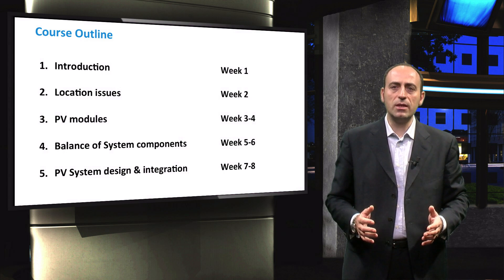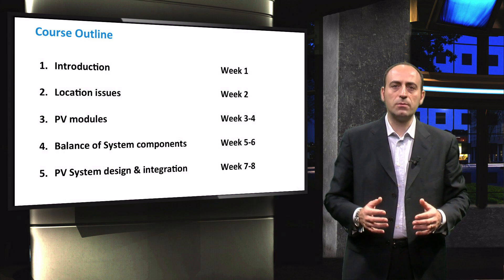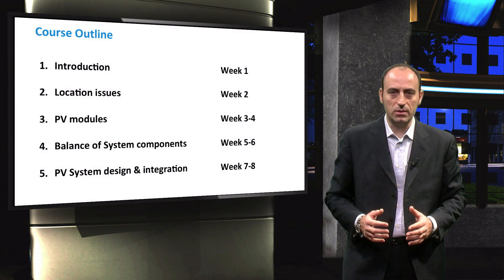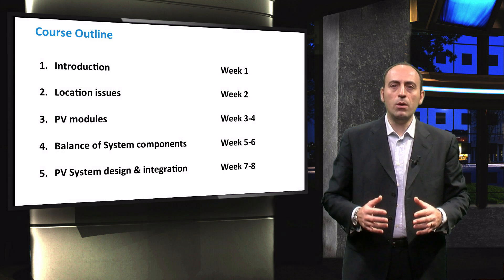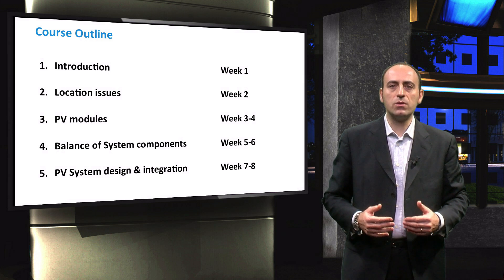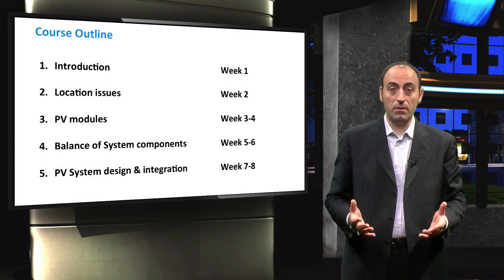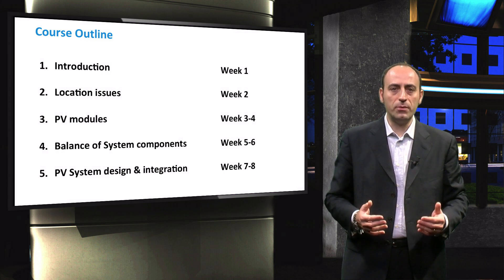The course Photovoltaic Systems is split into five parts. The first part will serve as a short introduction. In the second part, which takes place in week 2, we discuss all the issues involved with the location of a PV system. The third part, which consists of two weeks, we look into the PV module. In part 4, which takes another two weeks, we consider all the necessary balance of system components required to make a PV system. Finally, in part 5, we will apply the knowledge of all preceding weeks to design and integrate a PV system.